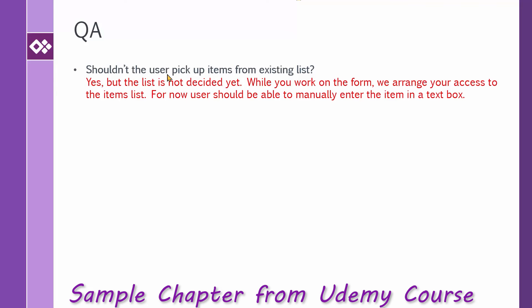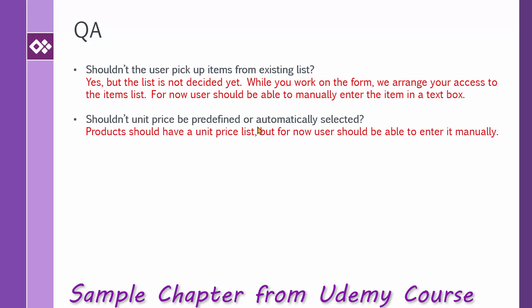We go to a Q&A session with the client and start asking our questions. Question number one: shouldn't the user pick up the items from an existing list rather than entering whatever they can possibly enter? The answer is yes, but the list is not decided yet. While we work on the form, they will arrange access to the items list. For now, users should be able to manually enter the item in the text box. Shouldn't the unit price be predefined and automatically selected? It doesn't really make sense for the user to manually enter the unit price. Yes — products should have a unit price list, but for now, users should be able to enter it manually.